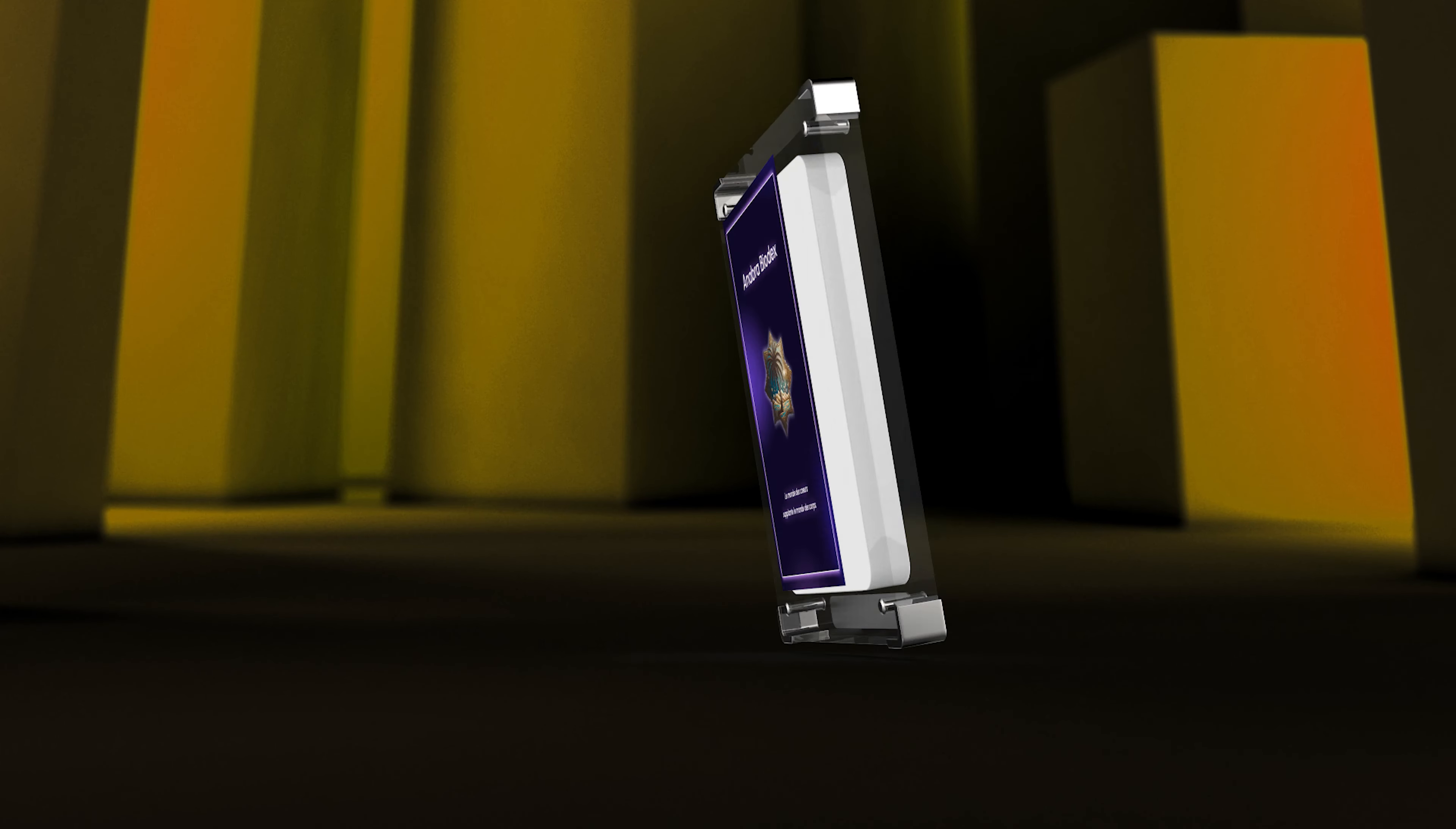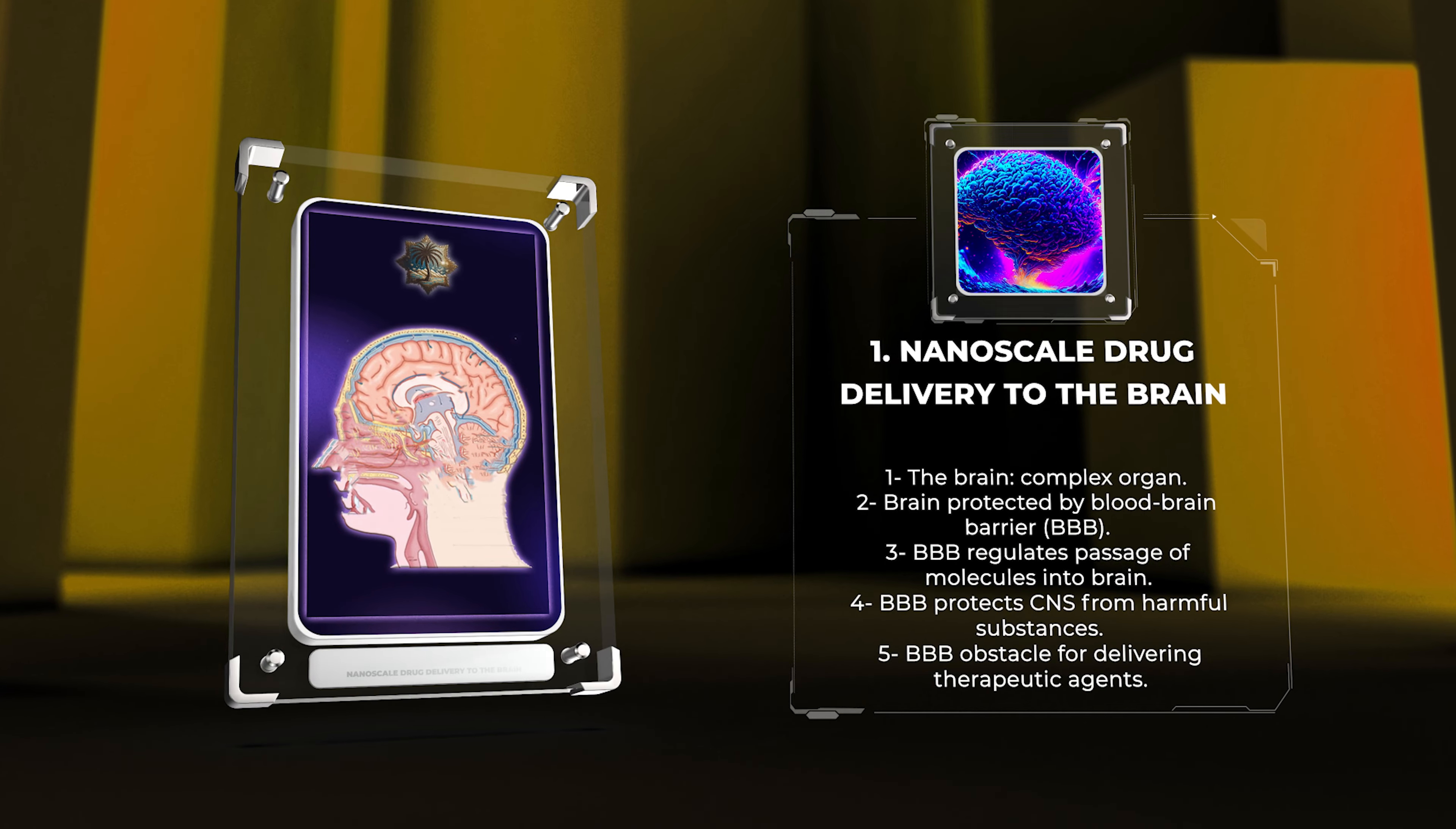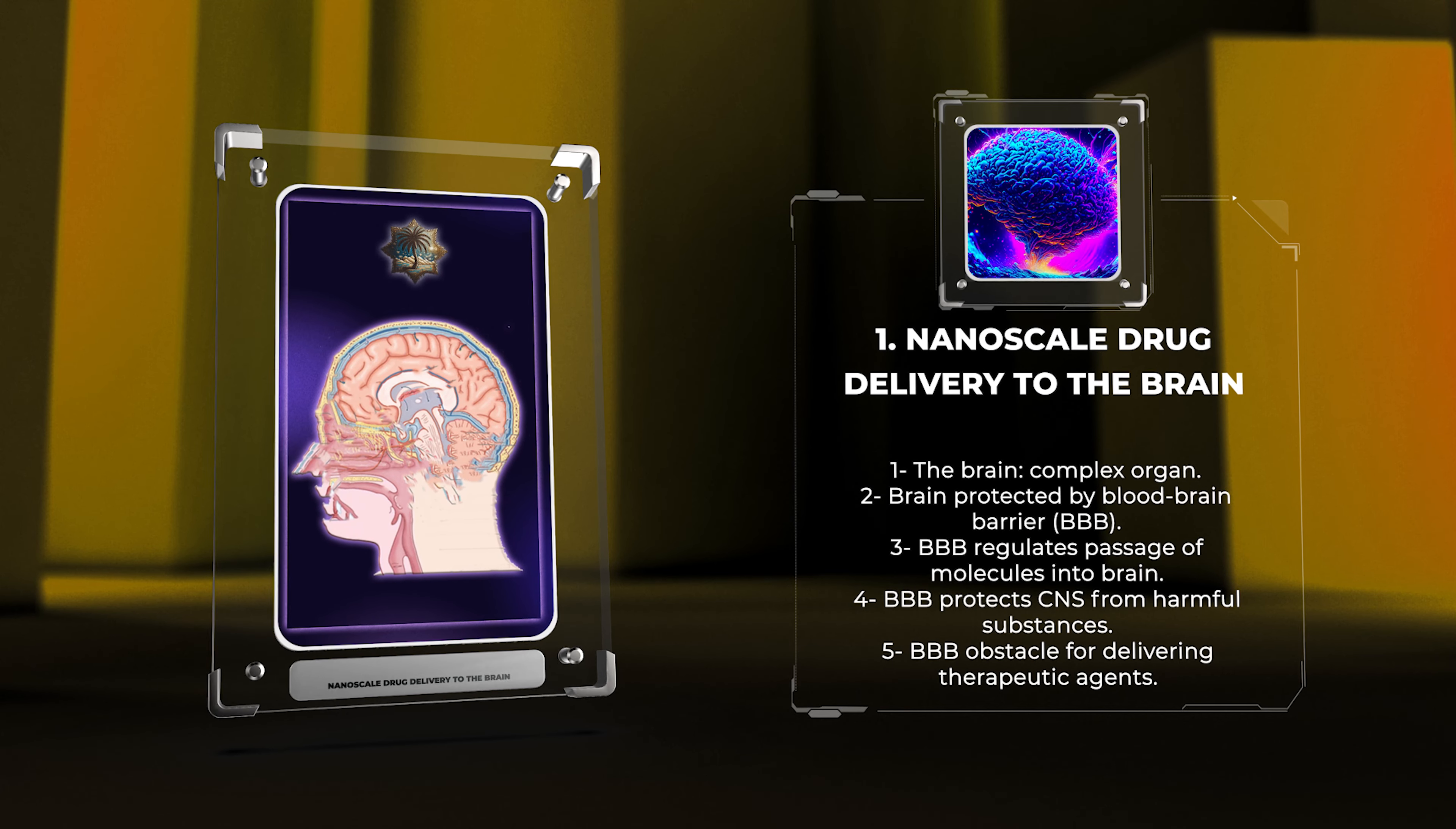The brain is a complex organ that is shielded by the blood-brain barrier, BBB, a highly selective barrier that regulates the passage of molecules from the bloodstream into the brain. The BBB's main function is to protect the central nervous system, CNS,